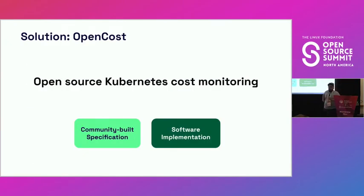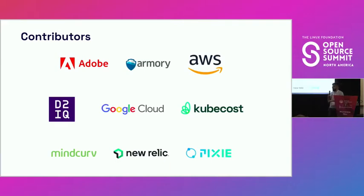To help address this problem, we built OpenCost, which is an open source Kubernetes cost monitoring application. There's a community-built specification, as well as a software implementation of it. Some of the contributors are practitioners like Adobe, actual cloud providers like AWS and Google, tooling companies like KubeCost — where I am a co-founder — and companies like D2IQ and New Relic, along with consulting companies like MindCurve.